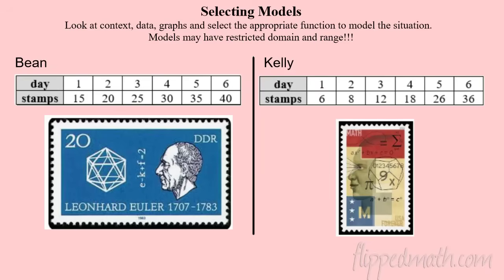All right, let's take a look at the next section — this one's all about selecting models. We're going to look at some word problems, data, and graphs and figure out what's the appropriate function: maybe linear, quadratic, cubic, absolute value, whatever it is. And then when we model it, are there any restrictions to our domain and range?